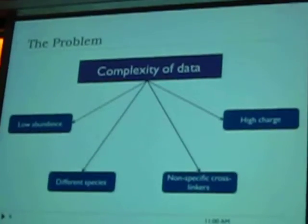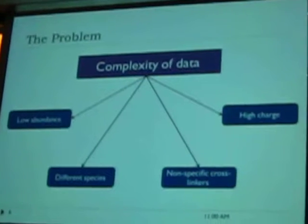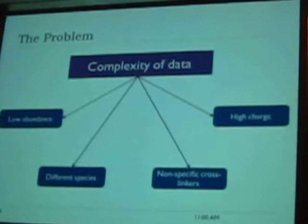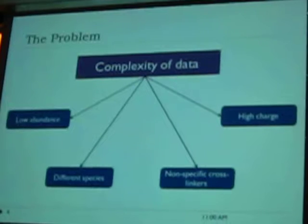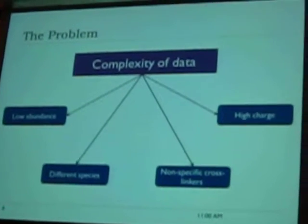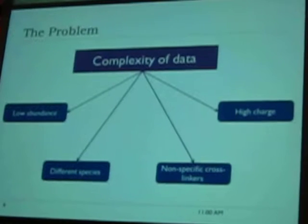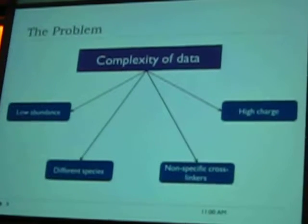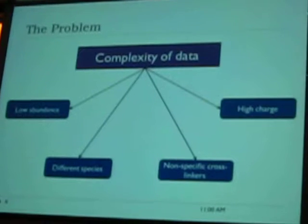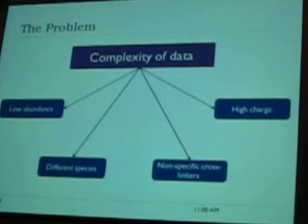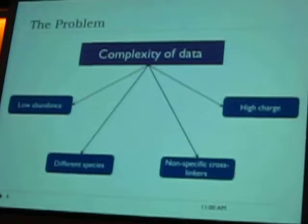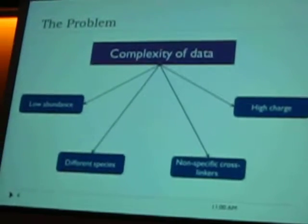So, what is the problem with data analysis? It is the complexity of data. First of all, the lower abundance of cross-link species. When we get the mass spectrometry data, it contains non-cross-link species and cross-link species. The cross-link species probably consist of only 1% of the entire spectrum. So, the first task is to identify, out of the entire spectra, which spectrum represents cross-link species and which represents non-cross-link species.